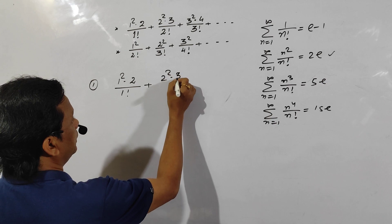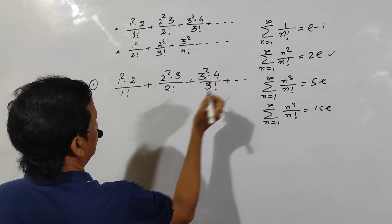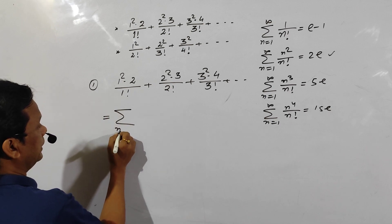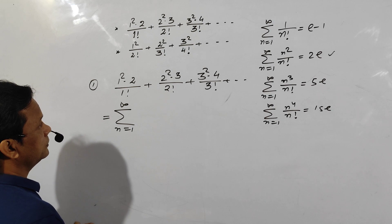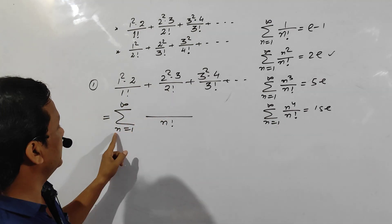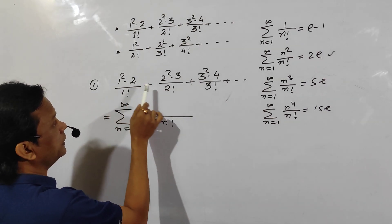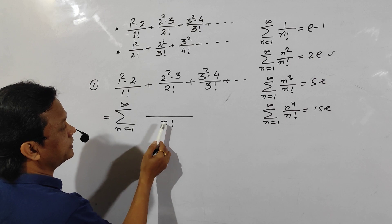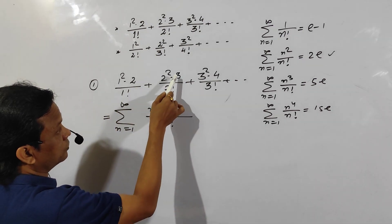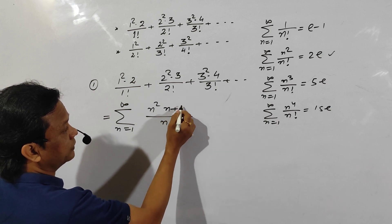The series terms are: 2² times 3 / 2 factorial, 3² times 4 / 3 factorial, and so on. This can be written as summation n equals 1 to infinity. Looking at the denominator: 1 factorial, 2 factorial, 3 factorial — that's just n factorial. The numerator squared part: if denominator is 1 then numerator is 1², if 2 then 2², if 3 then 3² — so that's n². The other factor is always 1 more than the denominator index, so it is n+1.